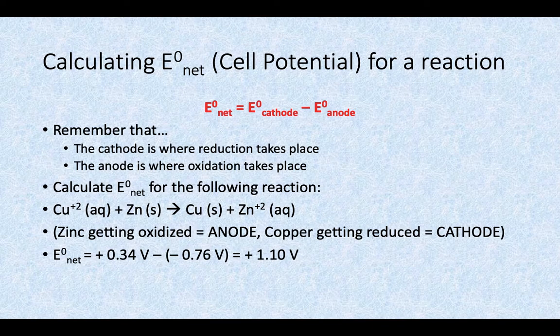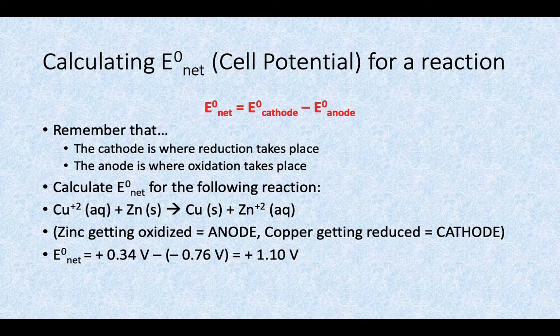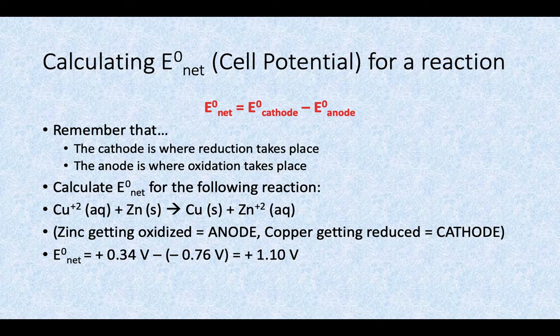Copper's value is 0.34 and then the zinc value on that standard reduction potential chart is negative 0.76. So when we do 0.34 minus a negative 0.76, we get a positive 1.1 volts.